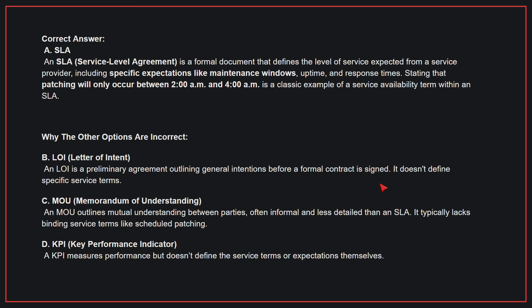Why the other options are incorrect? B: LOI — a letter of intent is a preliminary agreement outlining general intentions before a formal contract is signed; it doesn't define specific service terms. C: MOU — an MOU outlines mutual understanding between parties, often informal and less detailed than an SLA; it typically lacks binding service terms like scheduled patching. D: KPI — a KPI measures performance but doesn't define service terms or expectations themselves. Therefore, the correct answer is A.